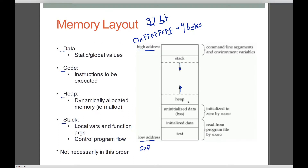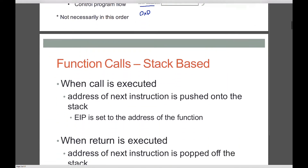In memory, most implementations will have the stack growing down and the heap growing up. The heap is used for dynamic memory allocation — things like malloc. The stack we generally reference less directly, and we use it for local variables and passing arguments to functions. It's essential for the overall flow of our program. The stack grows down, meaning as it gets bigger, the addresses are actually decreasing because we're going from higher addresses to lower addresses.